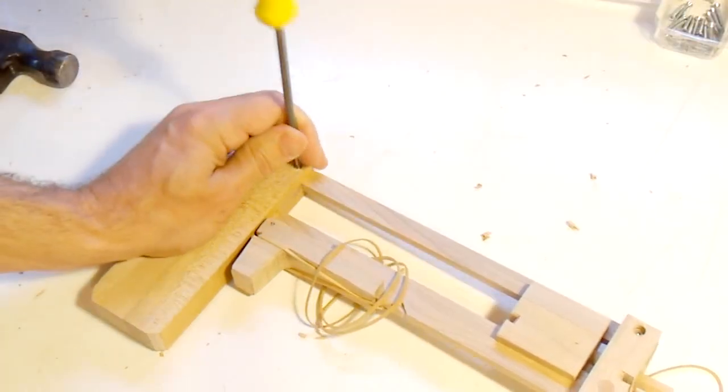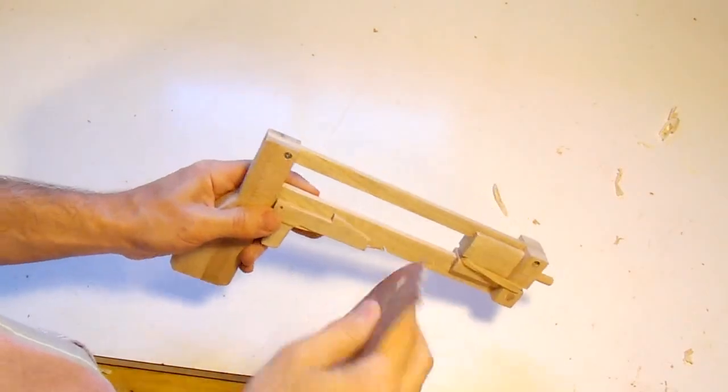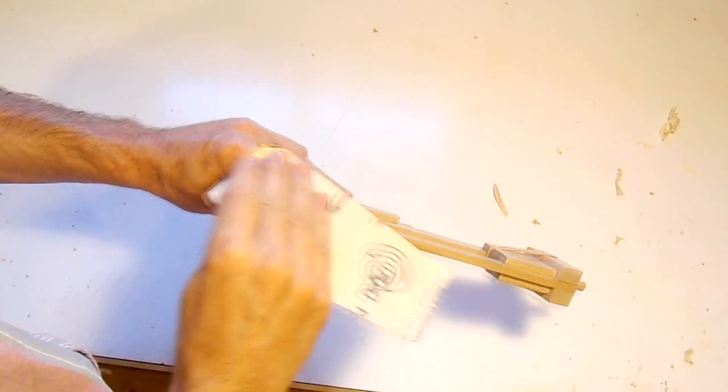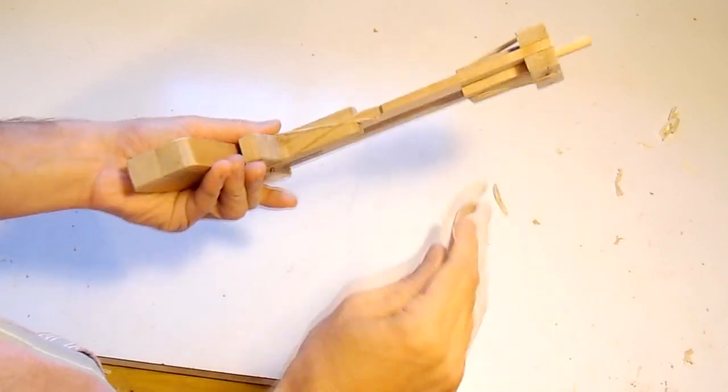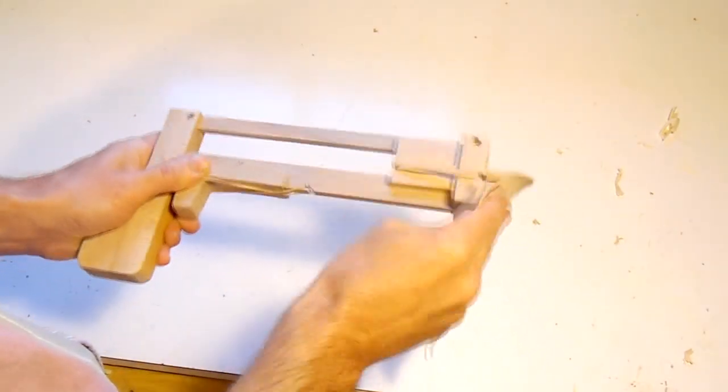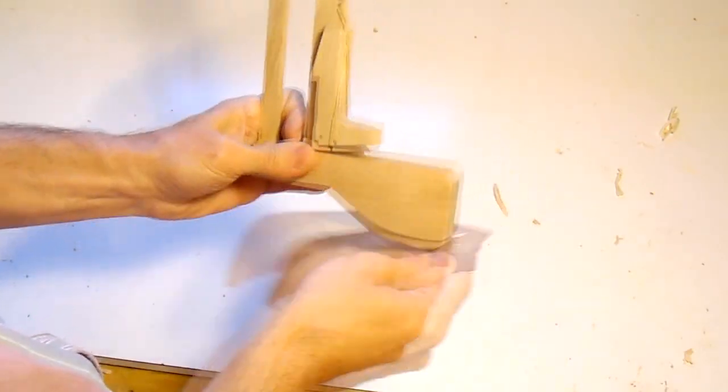Another thing that you'll probably wanna do with your Jenga pistol is just to take some reasonably coarse sandpaper and just kinda go over all the corners. That makes the Jenga pistol feel much nicer to the touch. You'll probably be playing with it a lot, so you might as well be comfortable holding it.